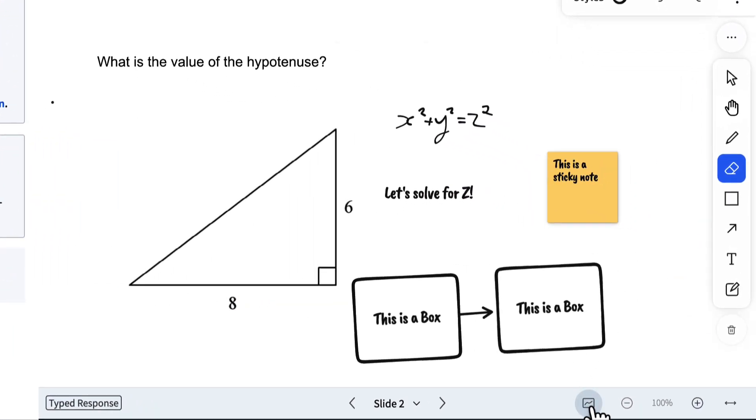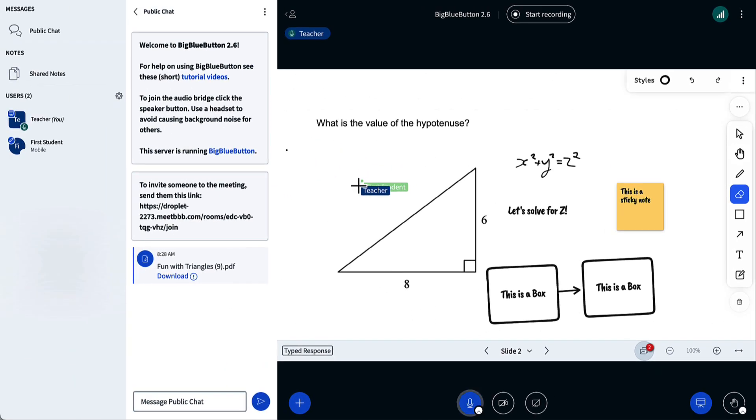The new whiteboard works with multi-user as well. If I turn on multi-user whiteboard, I move my cursor around, and students can move theirs as well. You can see students drawing in their own layer. You can turn off multi-user whiteboard to prevent them from drawing.